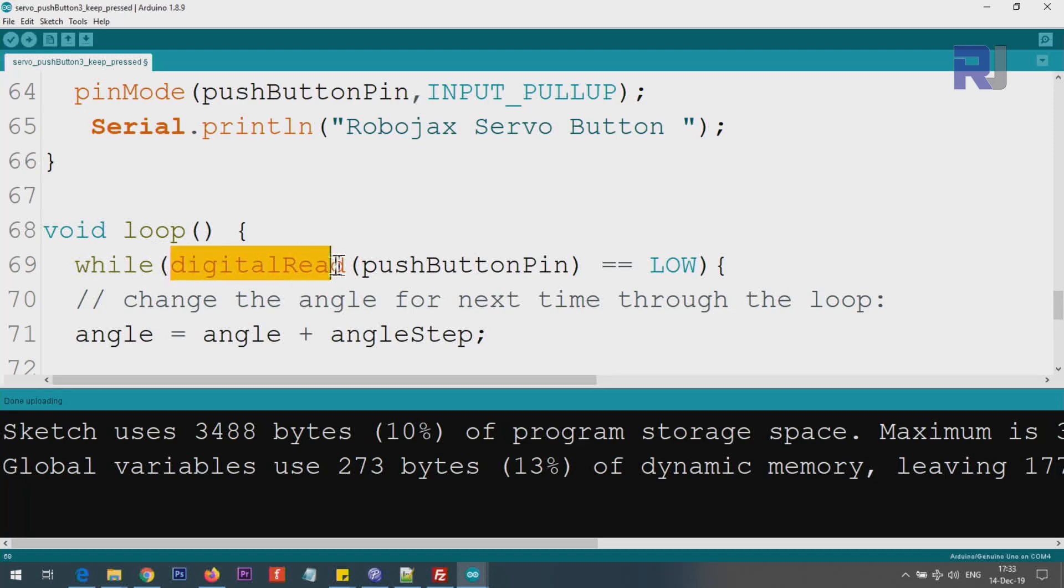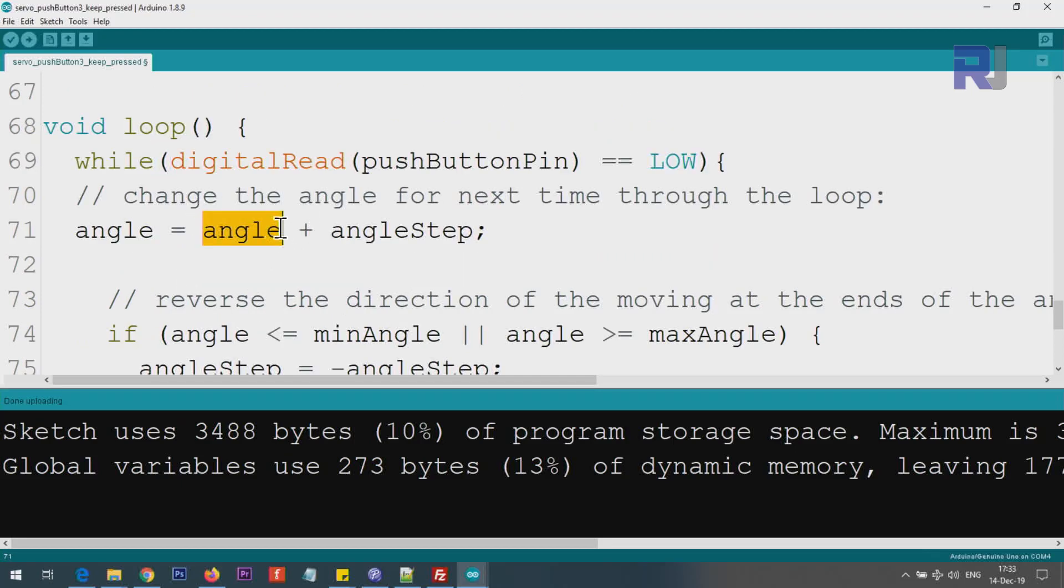Inside the loop, we use while and digitalRead pushButton. We read the push button value and we're checking it. If it equals LOW, then the push button is pressed. We have to do something. Here we take the angle and add angleStep. If this was 90, this will be plus 10, it will be 100. So we increment it and then angle will be there.